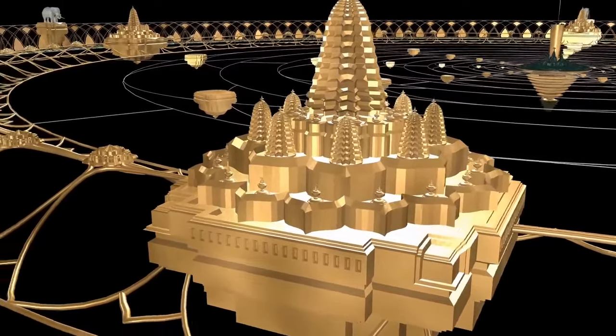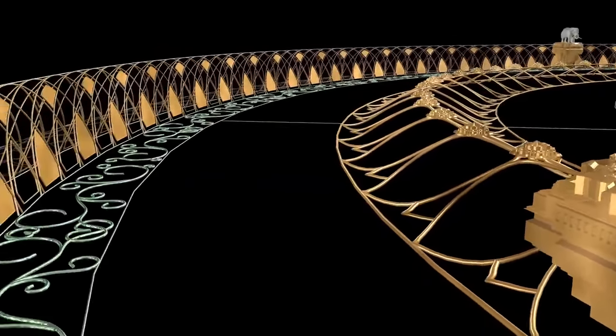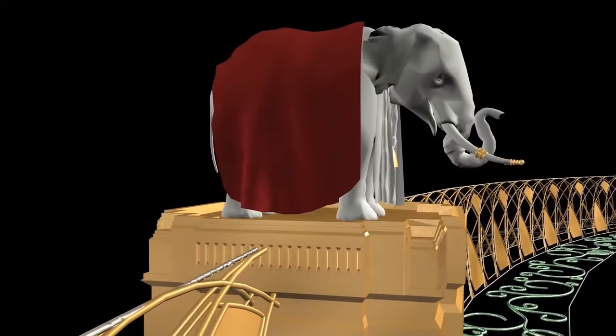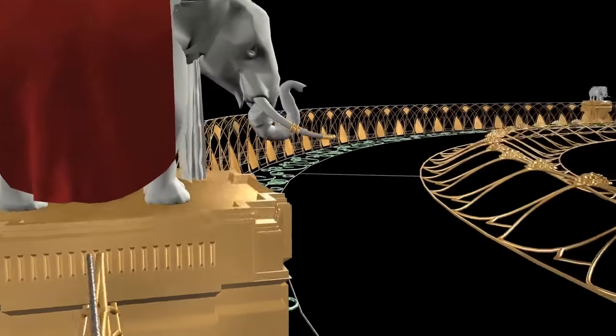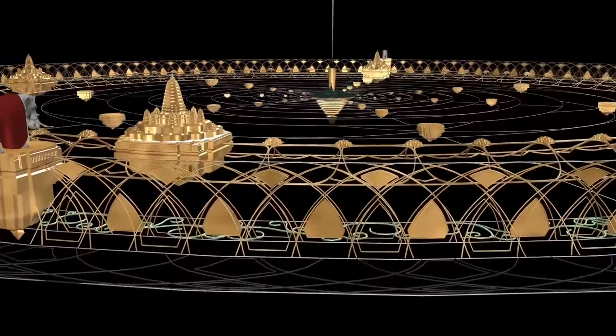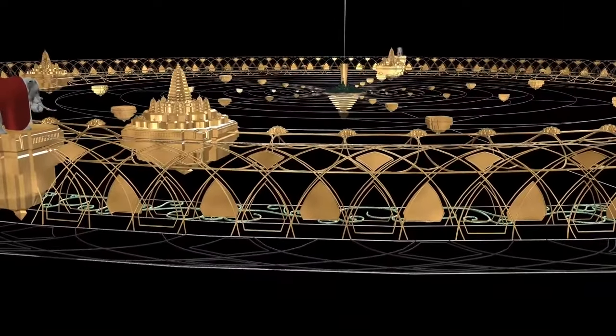Out further is Lokaloka Mountain. These large elephants stand atop Lokaloka Mountain to balance Bhumandala. Outside of Lokaloka Mountain is Alokavarsha, which is dark. The rays of the sun and the other luminaries extend up to Lokaloka Mountain.